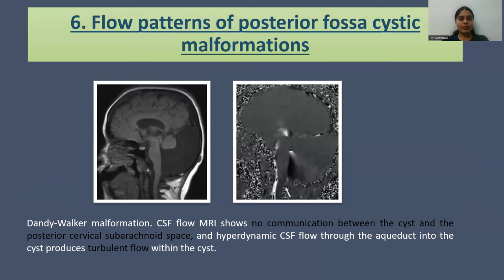Flow patterns of posterior fossa cystic malformations: in Dandy-Walker malformation, CSF flow MRI shows no communication between the cyst and the posterior cervical subarachnoid space, and hyperdynamic CSF flow through the aqueduct into the cyst produces turbulent flow within the cyst.